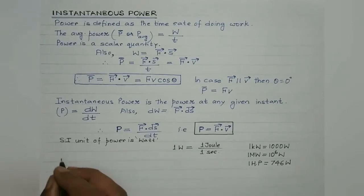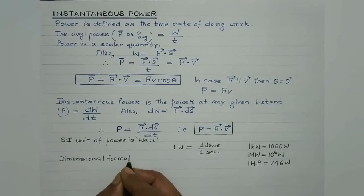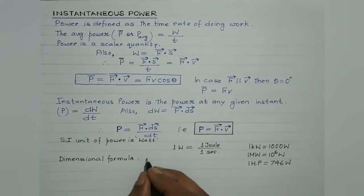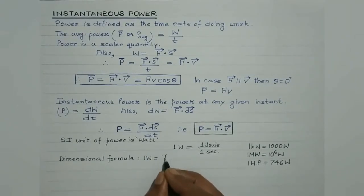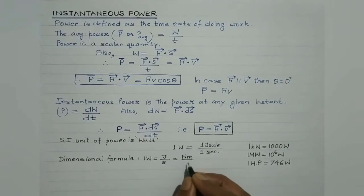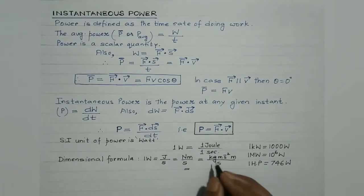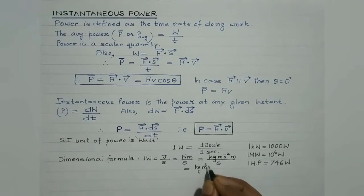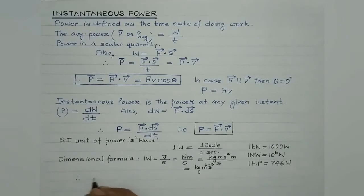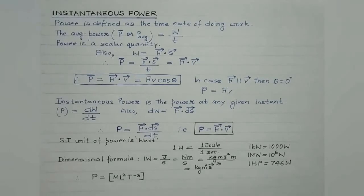Let us find the dimensional formula of power. Power is work done over time, which is joule per second. Joule equals Newton meter, and Newton equals kg meter per second squared. Working it out gives kg times meter squared times s to the power minus 3. Therefore the dimensional formula for power is M L² T to the power minus 3.